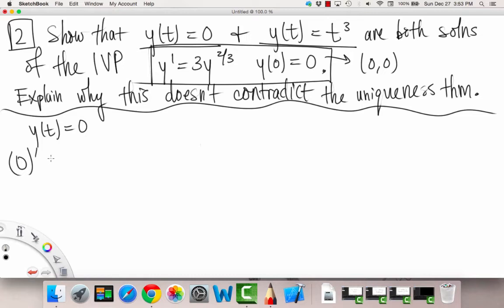So if we take the first derivative of 0, we just get 0. And this equals 3 times 0 to the 2/3. Yes, so 0=0.